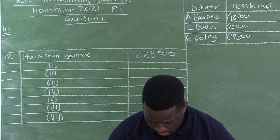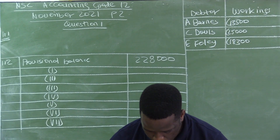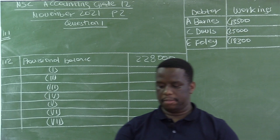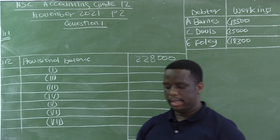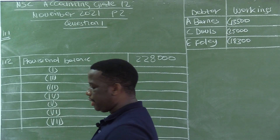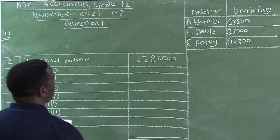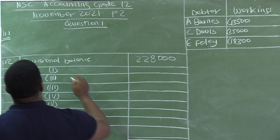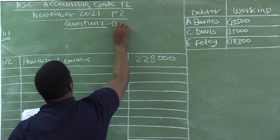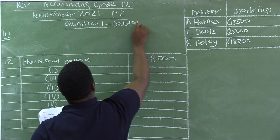Let's then go to the question paper so that we can do this question. Question 1 is based on debtors reconciliation and age analysis.